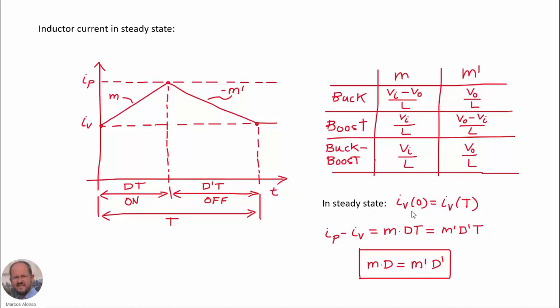We know that in steady state, the current at the beginning of the switching period has to be equal to the current at the end of the switching period. We designate this valley current as IV and the peak current as IP. So in steady state, the difference between the peak current and the valley current equals m·d·T, and also equals m-prime·d-prime·T, just by analyzing the triangles. This gives us the important steady-state relationship between the slopes and the duty cycle d and the complementary duty cycle d-prime, where d-prime equals 1 minus d.